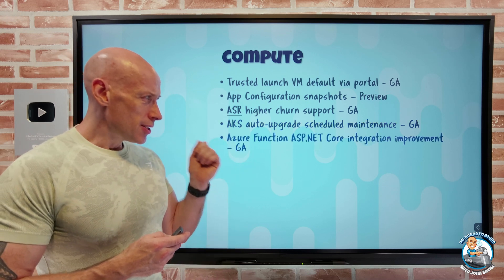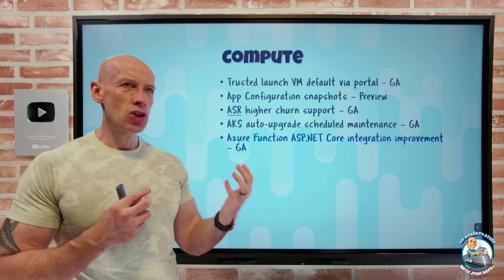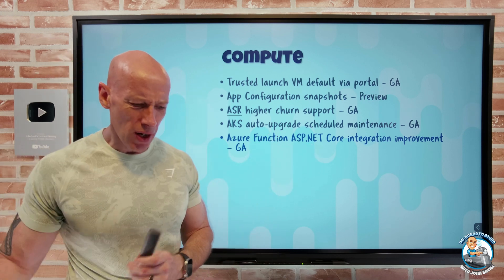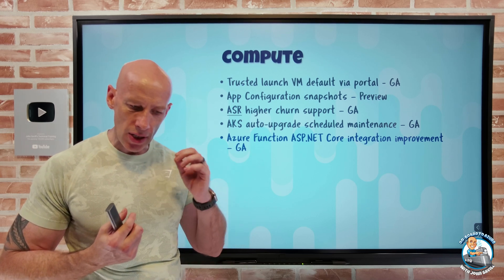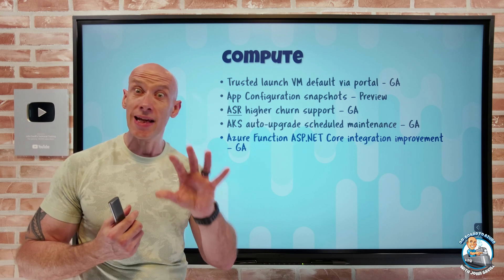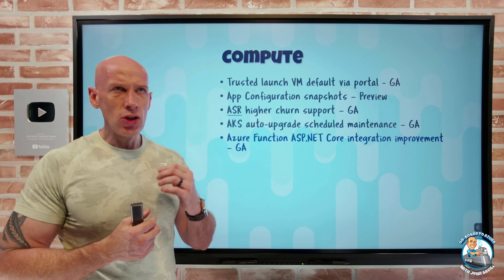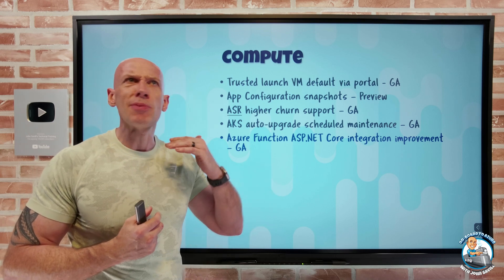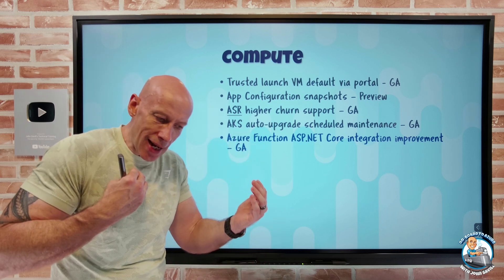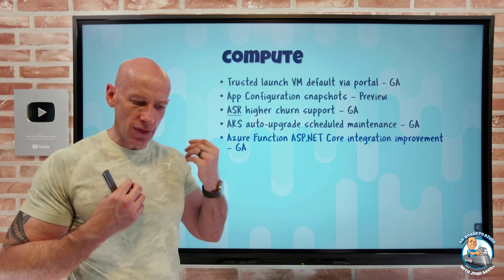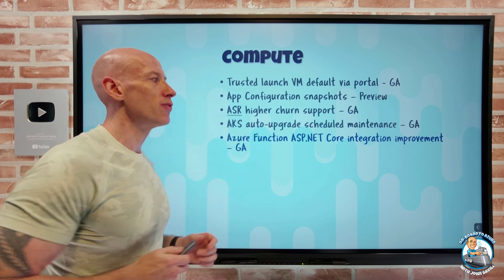Azure Functions with ASP.NET Core now have integration improvements with .NET Core. If you're working with HTTP triggers in isolated functions — where isolated means you can run a version of .NET different from the underlying host — you can now use ASP.NET HTTP requests, HTTP responses, and IActionResults. This lets you leverage your existing knowledge of ASP.NET Core better within your Azure Function projects.